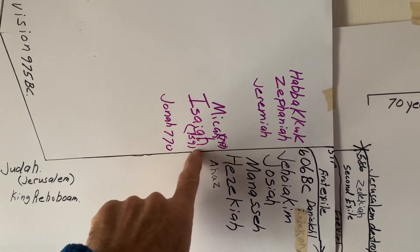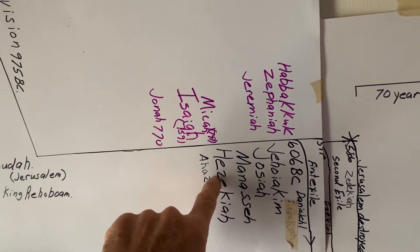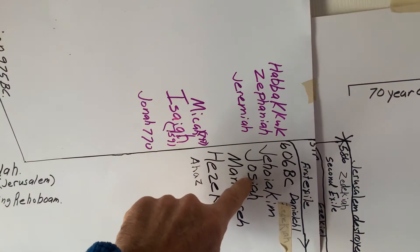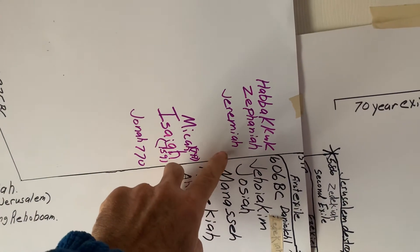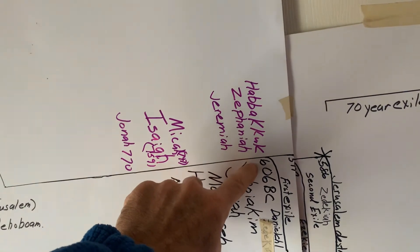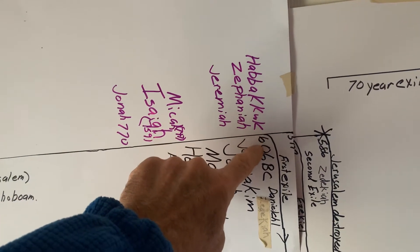Only in the south. Some of these names you'll recognize from scripture: Ahaz, Hezekiah, Manasseh, and Josiah. And what we have here is the first deportation to Babylon.